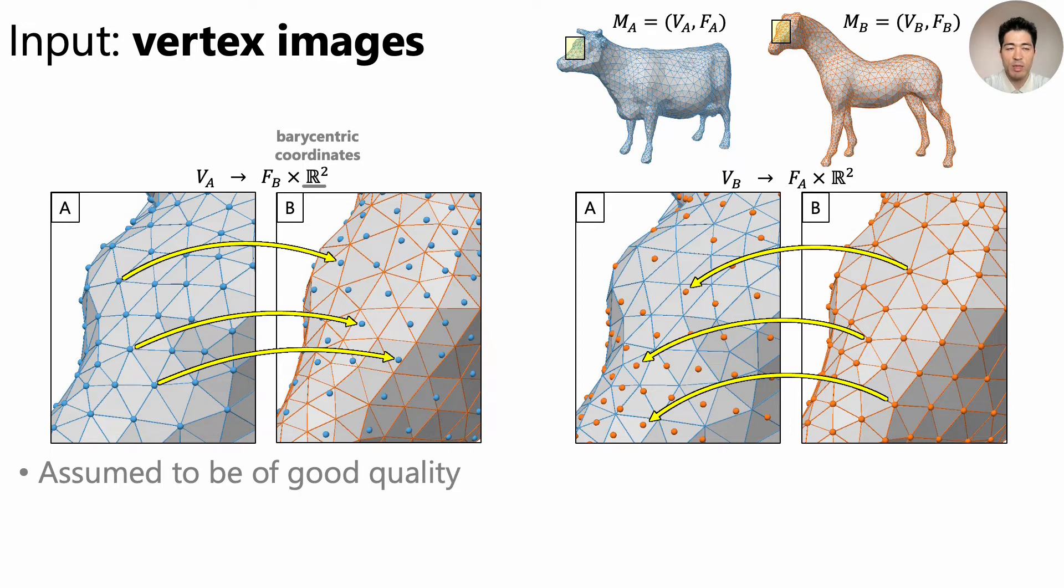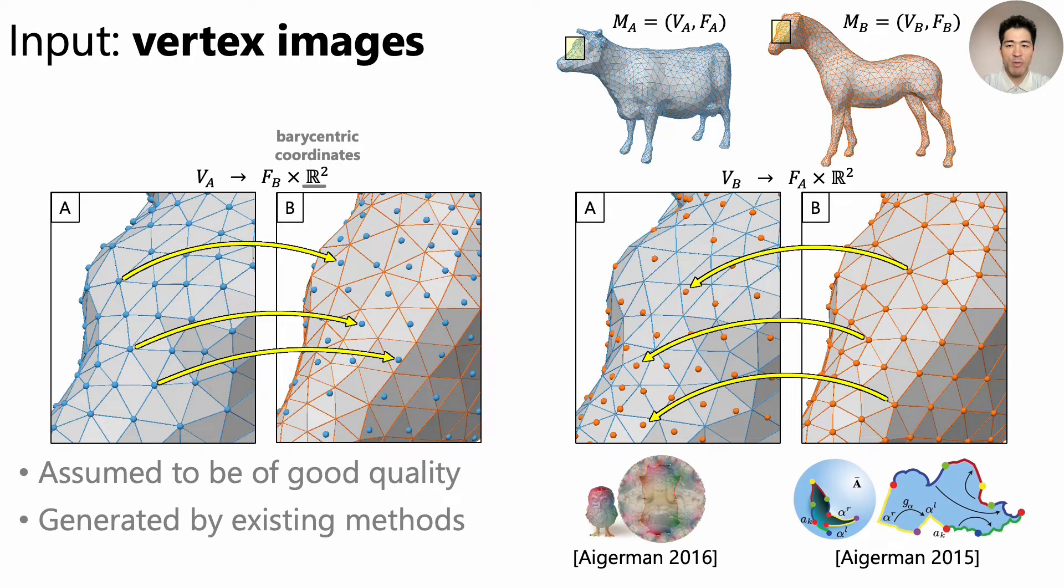Importantly, we assume that these vertex images are of some good quality. They must not be some random inconsistent assignments, otherwise our algorithm will fail. And they can be generated using any of the existing methods. Specifically, we use these in our work.